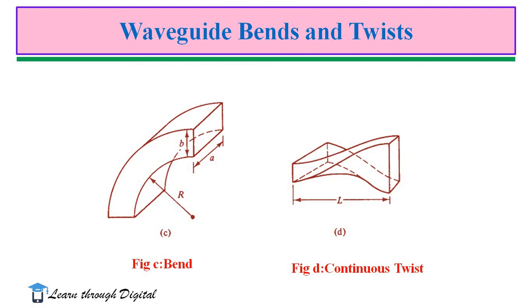In order to prevent reflections, this waveguide bend must have a radius greater than 2 wavelengths.